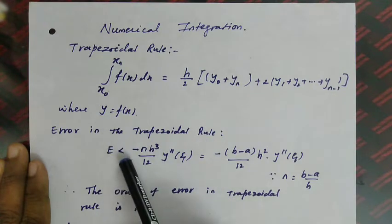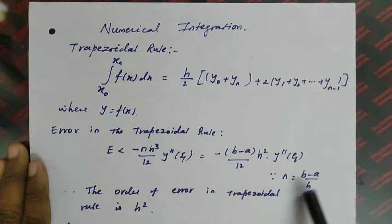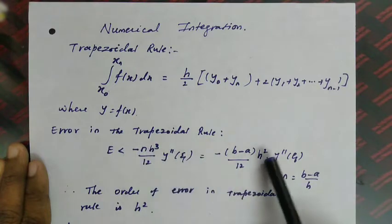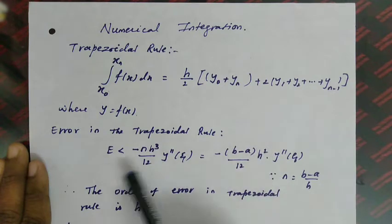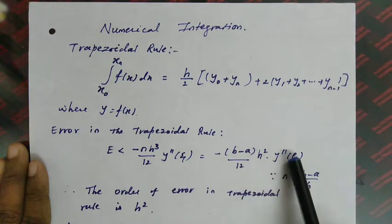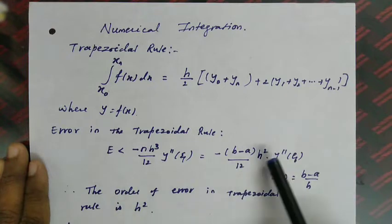The error E is less than −nh³/12. In place of n, we substitute (b−a)/h, so h cancels and we get h² remaining. Therefore E = −(b−a)/12 × h² × y''. Since the order of error in the trapezoidal rule is h², this h² is called the order of error in the trapezoidal rule.